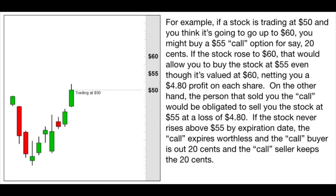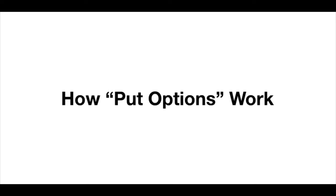For example, if a stock is trading at $50 and you think it's going to go up to $60, you might buy a $55 call option for 20 cents. If the stock rose to $60, that would allow you to buy the stock at $55, netting you a $4.80 profit on each share. The person who sold you the call would be obligated to sell you the stock at $55, at a loss of $4.80. If the stock never rises above $55 by expiration, the call expires worthless — the buyer is out 20 cents and the seller keeps the 20 cents.